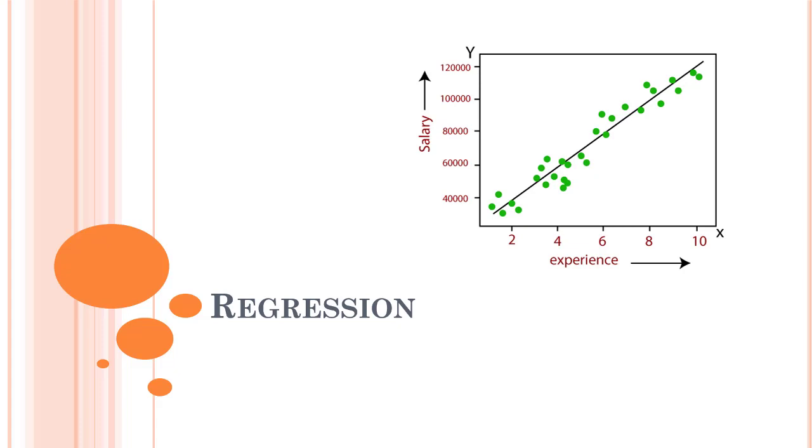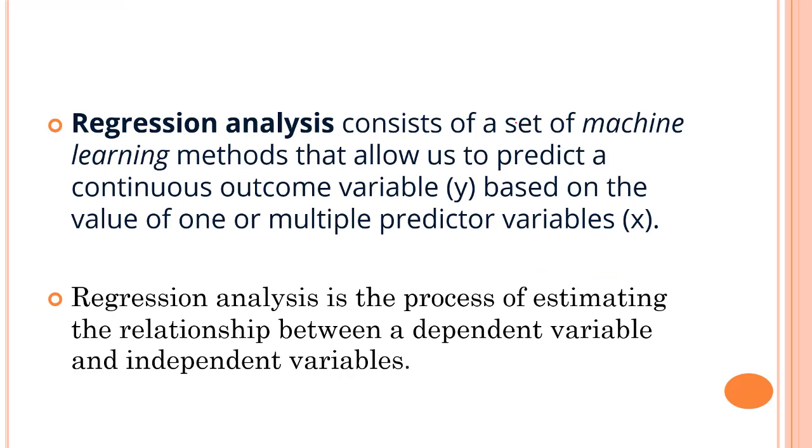Regression is a supervised learning algorithm. What I mean by supervised learning is we will be having a target variable. For each feature - let's say the feature is experience, which might be X - the target variable will be salary. X are the features and Y is the salary. Regression analysis is a statistical method to model the relationship between a dependent and independent variable with one or more independent variables.